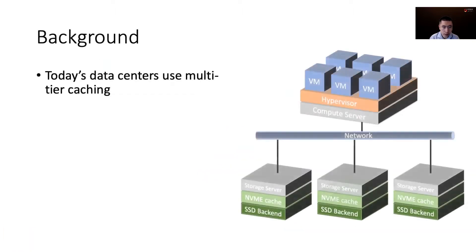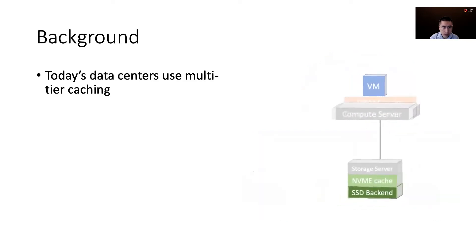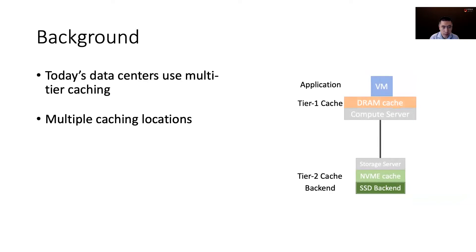In today's data centers, caching is often provisioned on multiple tiers in cloud storage systems. When client applications running in virtual machines generate block IOs to remote storage media, the request passes through a series of intermediate layers, such as user-space libraries, hypervisors, and extra storage nodes. Each layer presents a caching opportunity, and thus most cloud providers adopt multi-tier caching architectures to maximize the utilization of scattered resources in the system.